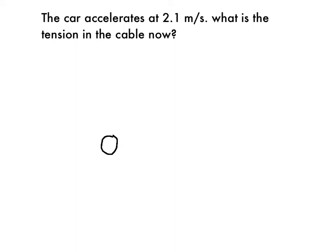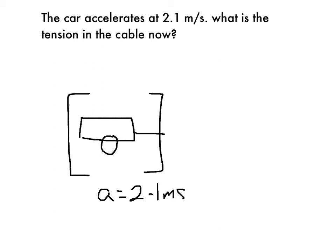Any time you're asked about the cable interconnecting them, it's always a good idea to think just about the trailer. So we have this object, the trailer, moving through space. It's accelerating at 2.1 meters per second squared. It has a mass of 800 kilograms.